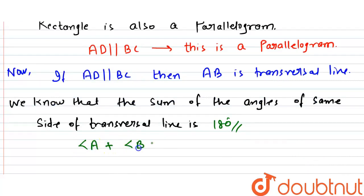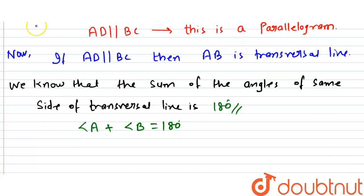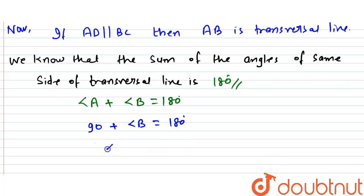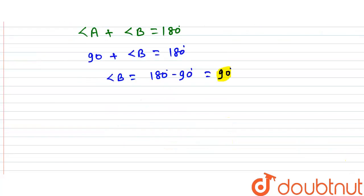So angle A plus angle B equals 180 degrees. We have assumed angle A is 90 degrees, so 90 plus angle B equals 180 degrees. Therefore, angle B is equal to 90 degrees.